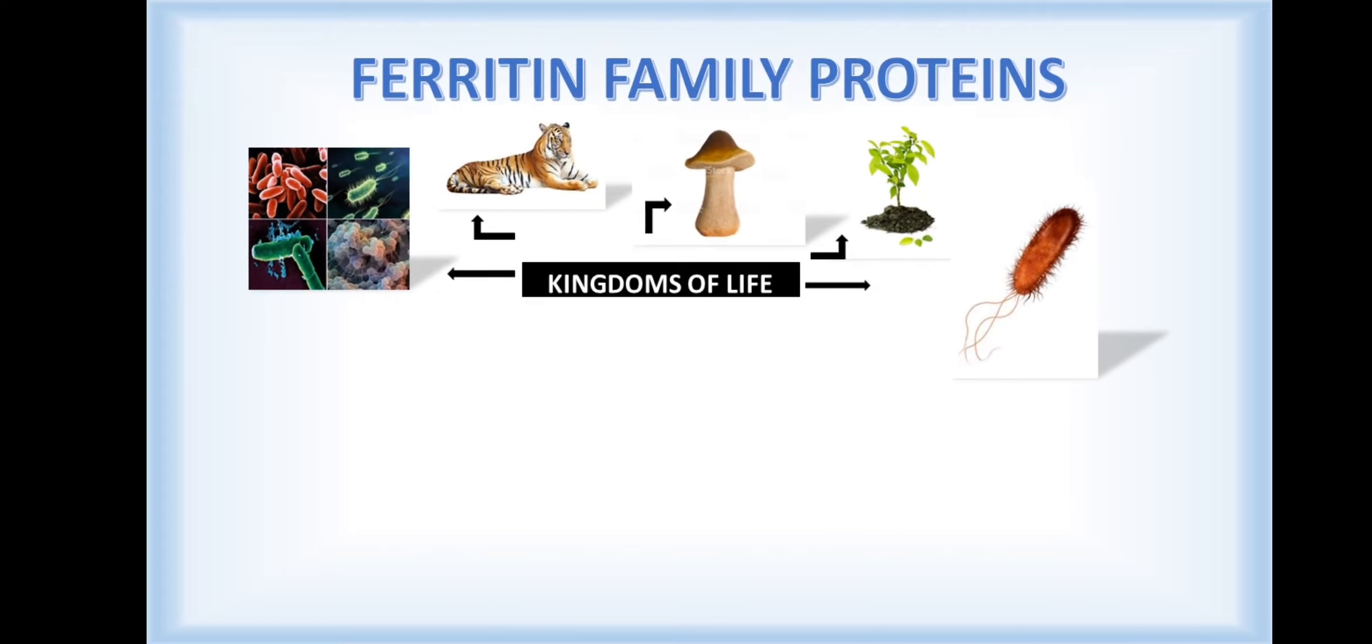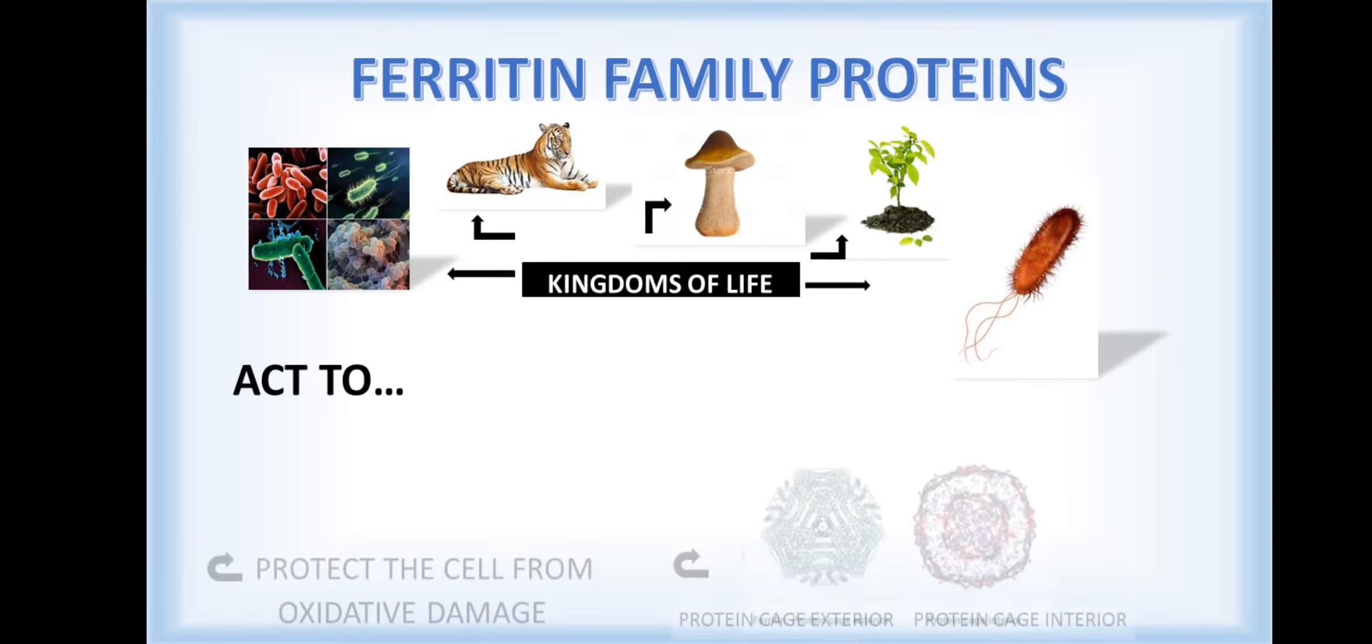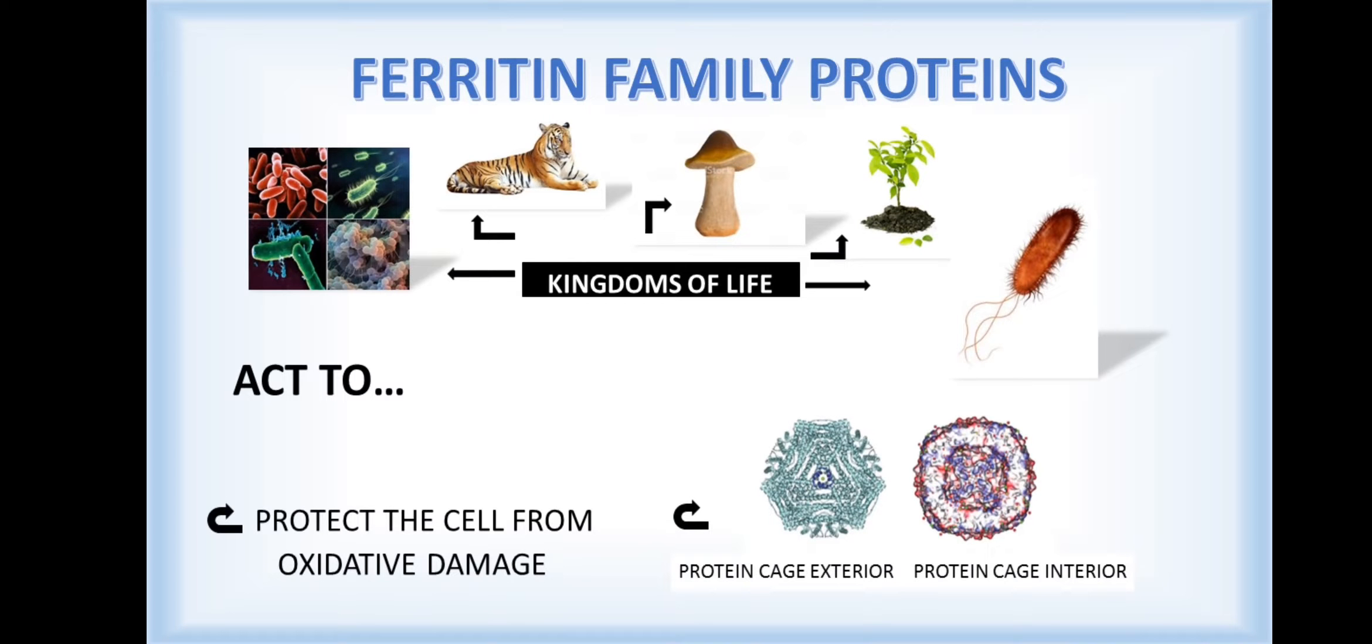Ferritin family proteins are found in all kingdoms of life and act to store iron within a protein cage and to protect the cell from oxidative damage caused by the Fenton reaction, which is an advanced oxidation process.